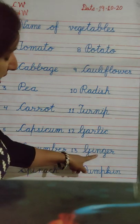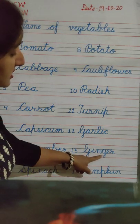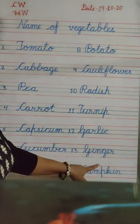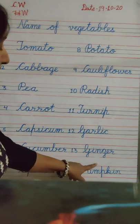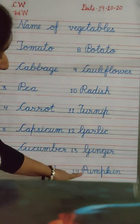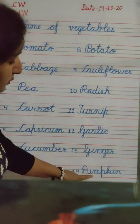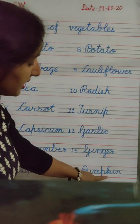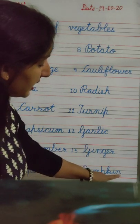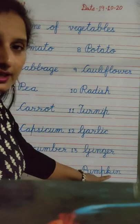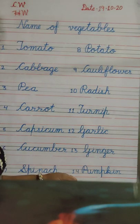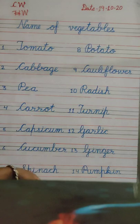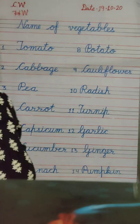Next. G, I, N, G, E, R — Ginger. Ginger means Adrak. Next. P, U, M, P, K, I, N — Pumpkin. Pumpkin means Kaddu. Okay, students, so you are to write these vegetable names in good handwriting. Now, bye-bye.